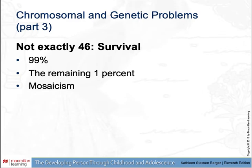Not exactly 46 chromosomes: 99% of surviving fetuses have 46 chromosomes. For the remaining 1%, only about one newborn in 166 births survives with 45, 47, or rarely 48 or 49 chromosomes. Survival is more common if only some cells have 47 chromosomes and others have 46 — a condition called mosaicism.